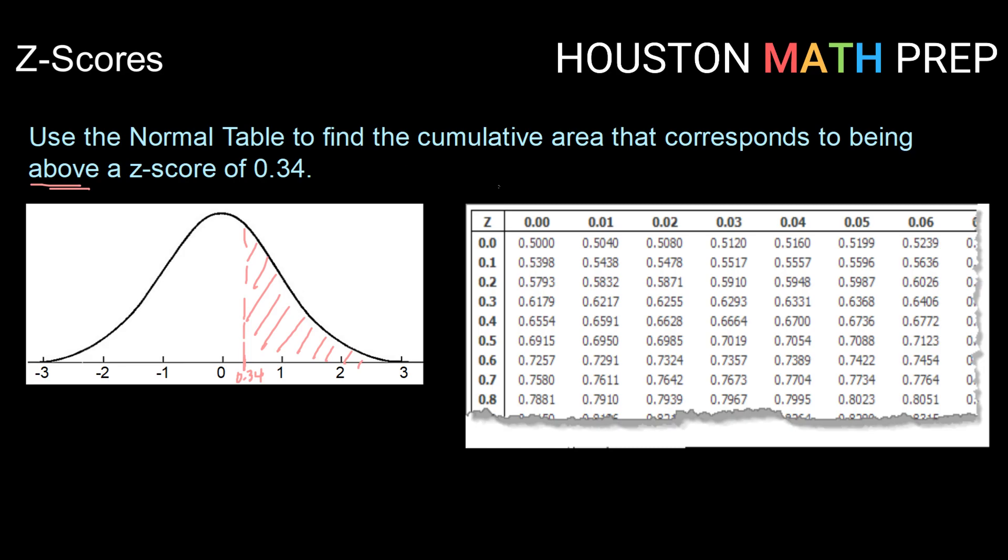Now, our z-score table always tells us area below. Okay, so that's what this always tells us. But we know that the area under the entire curve is equal to 1. So if we do 1 minus the area below, that will leave us with the area above. So in this case, we're actually going to use the table to find the area below 0.34 and do 1 minus that to get our area above.